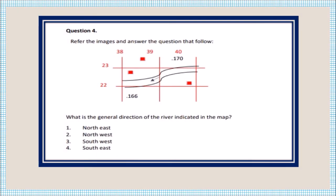Question number four: what is the general direction of the river? Two easy ways to find the general direction or flow of the river. First, see whether there is an arrow mark given in the river — whichever direction the arrow is moving is the direction of flow. Here it is moving towards the southwest. Second, if no arrow mark is given, refer to the spot heights on the map — the direction in which the spot height values are decreasing is the direction of flow. Here the decreasing spot heights also point southwest, so the general direction of the river is southwest.